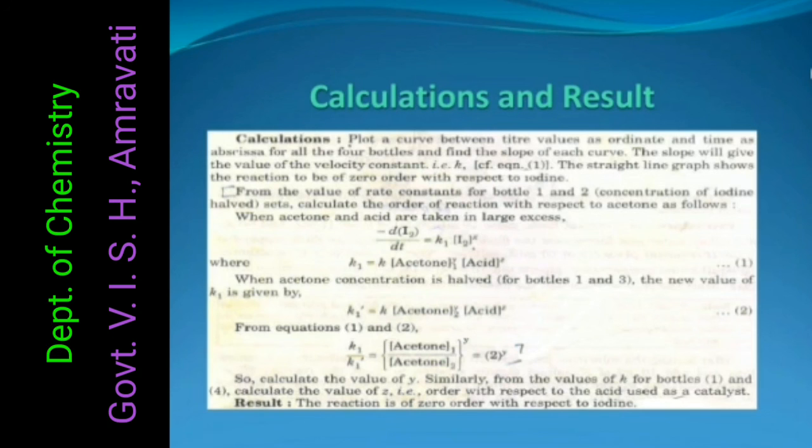So, calculate the value of y. Similarly from the value of k for bottle 1 and 4, calculate the value of z, i.e. order with respect to the acid used as catalyst.